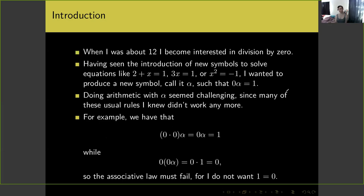When I was about 12, I became interested in division by zero. I had already seen the introduction of new symbols to solve equations like two plus x equals one, three times x equals one, or x squared equals negative one — giving negative one, one-third, and the imaginary number i, respectively. And so I wanted to produce a new symbol, let's call it alpha, so that zero times alpha equals one.